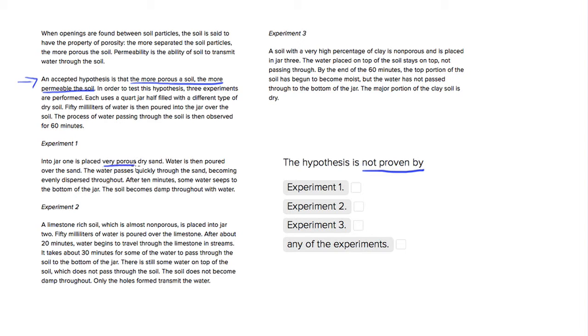we have very porous dry sand, and then water's poured over the sand. Water passes quickly through the sand and is dispersed throughout. Water goes to the bottom of the jar. So this is definitely proving the experiment. So we want to get rid of any choice with experiment 1. So let's get rid of choice number 1.